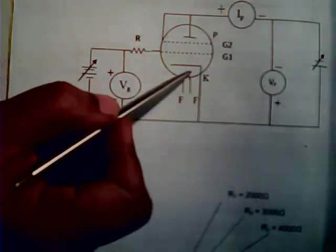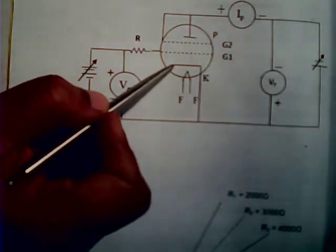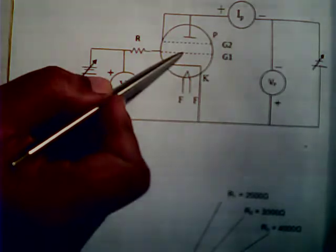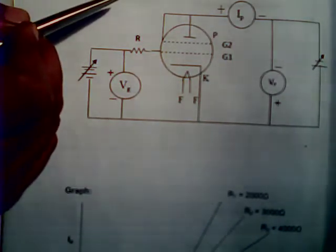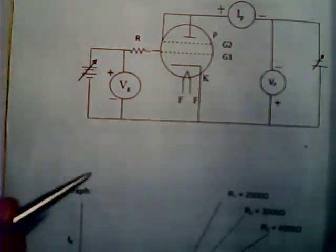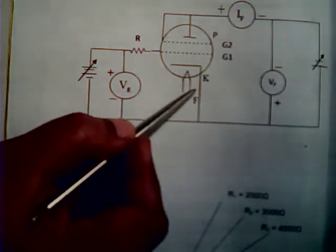This will happen only when the potential between these two attains a particular value. That particular value is going to be called the ionization potential.